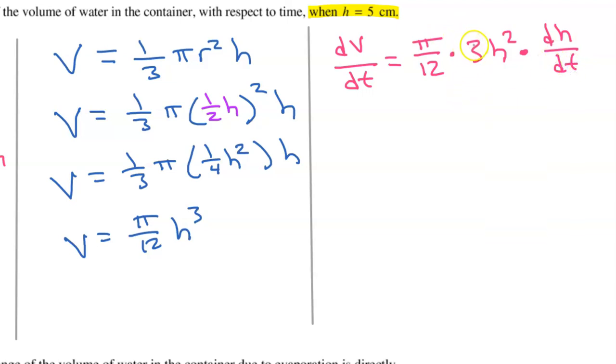So I'm going to simplify this. 3 goes into 12, 4 times. So we have dV/dt is equal to pi over 12. I'm sorry, pi over 4. h squared dh/dt.